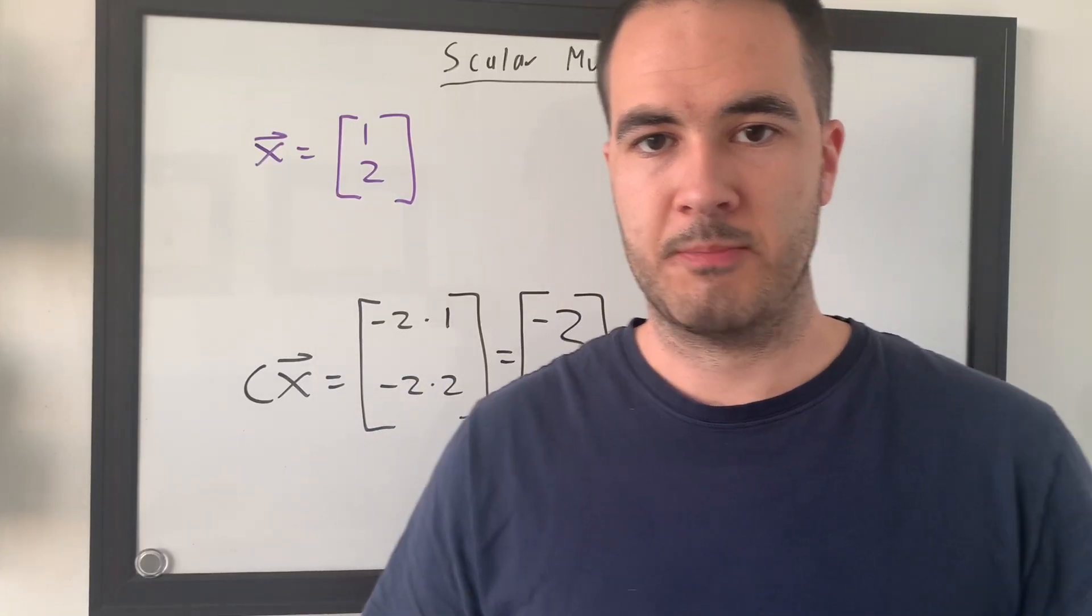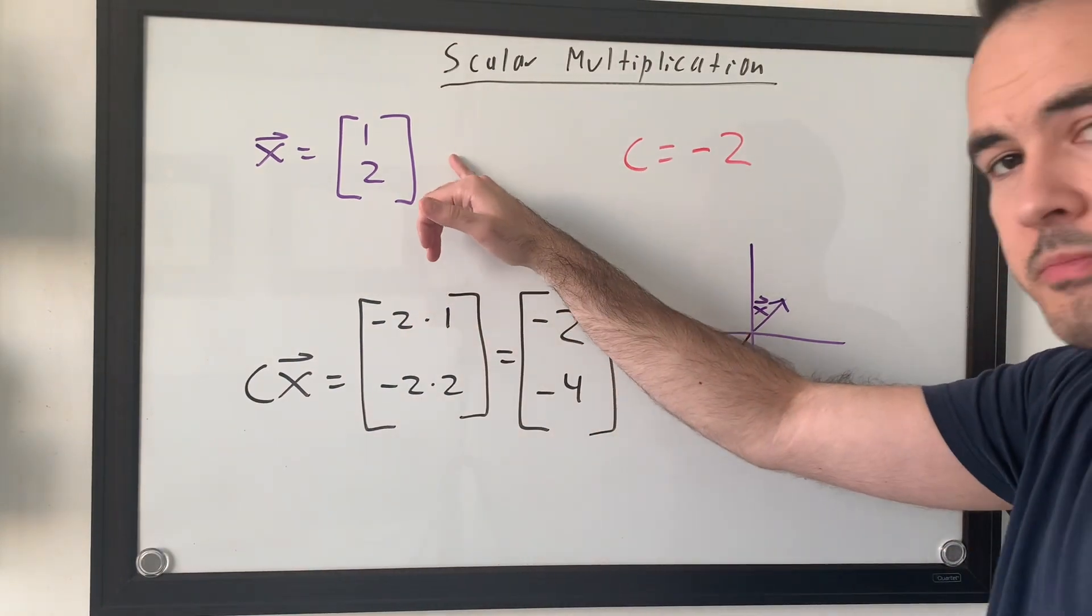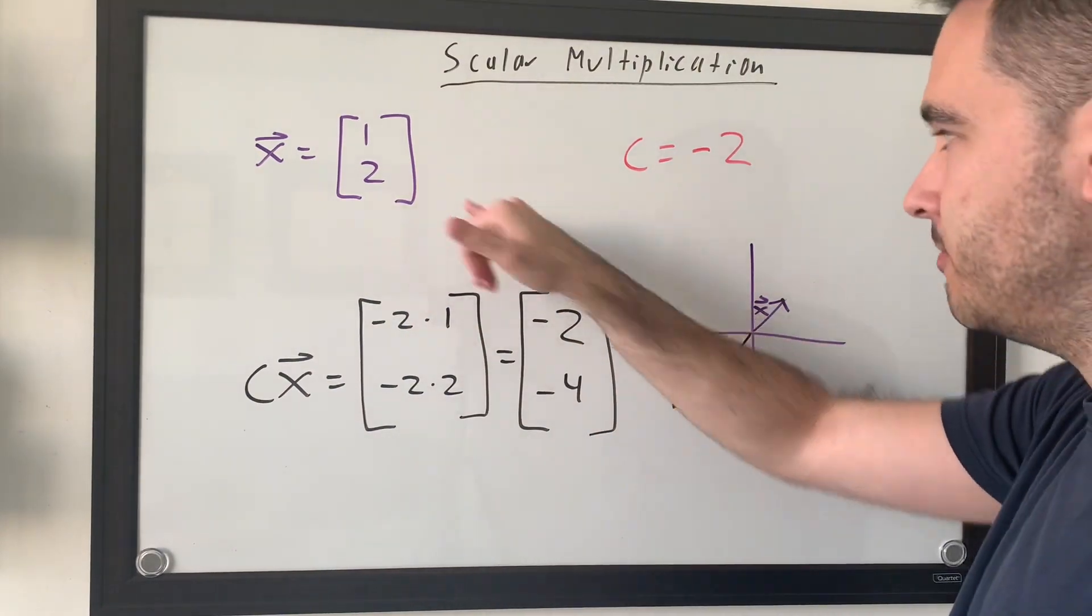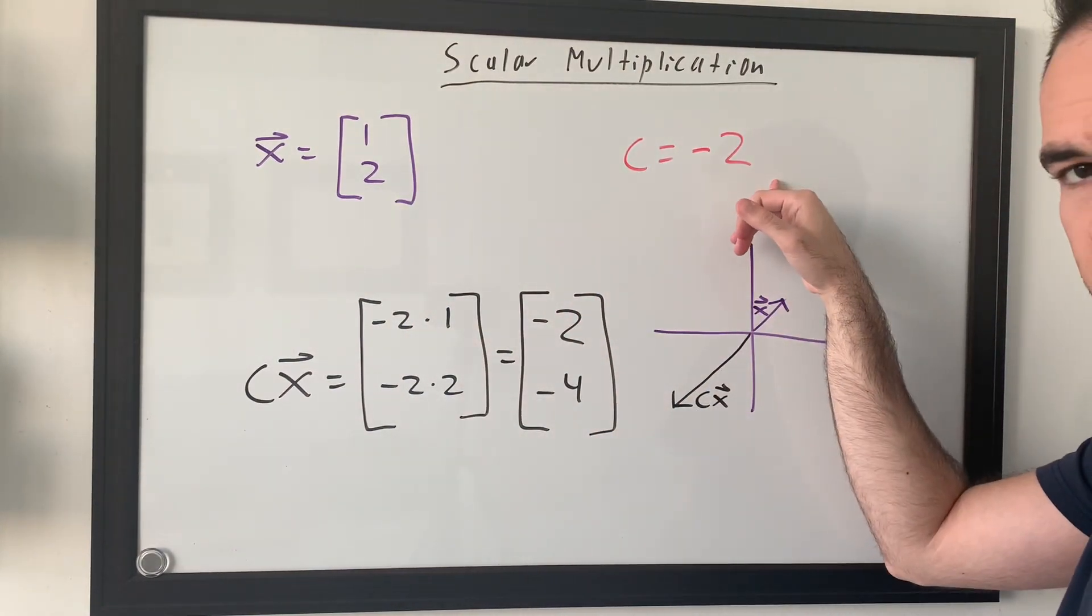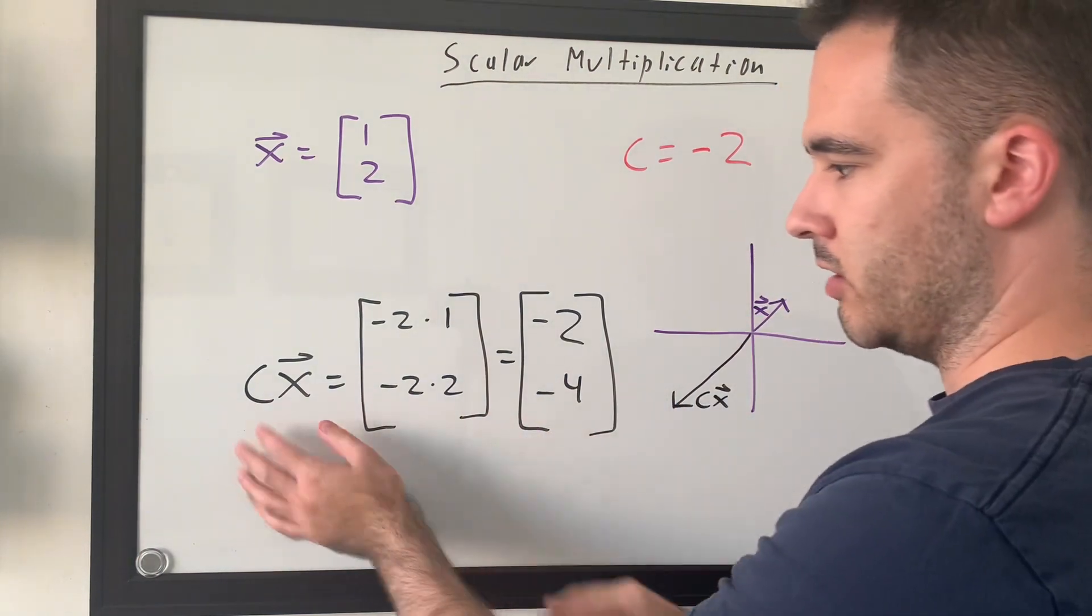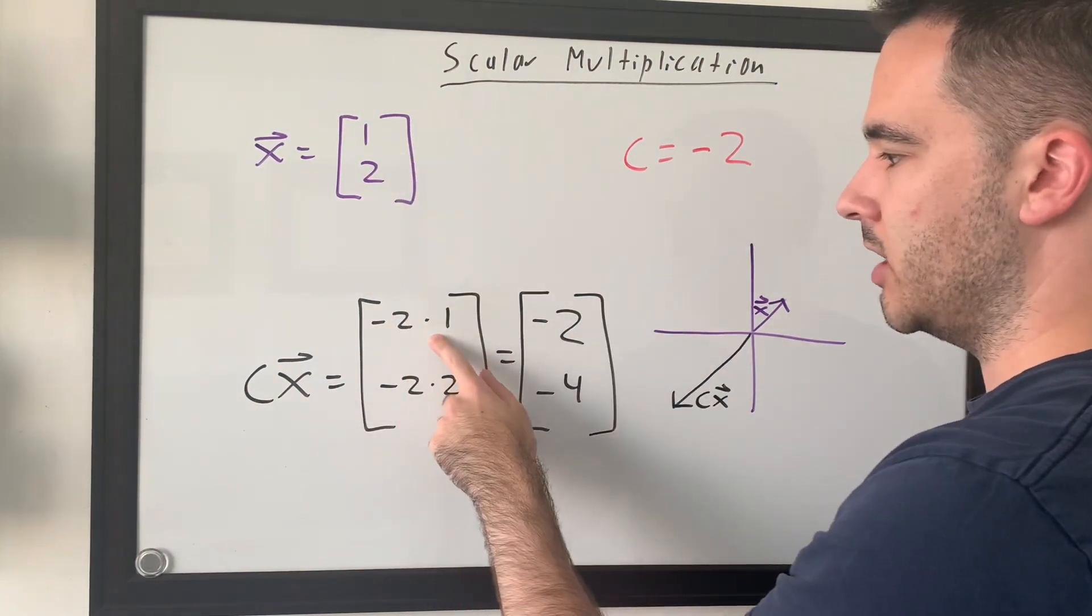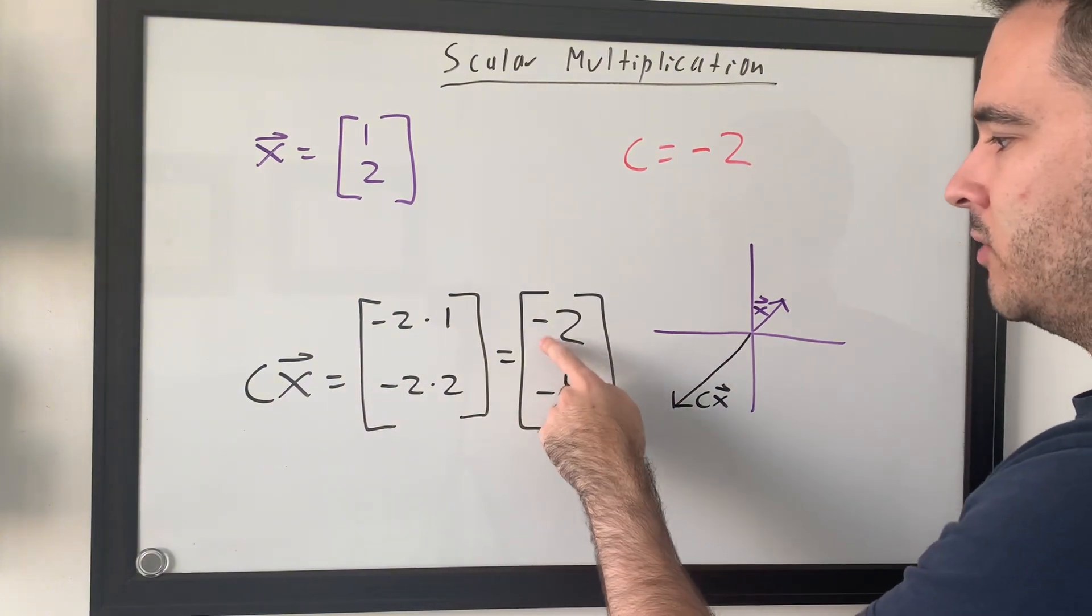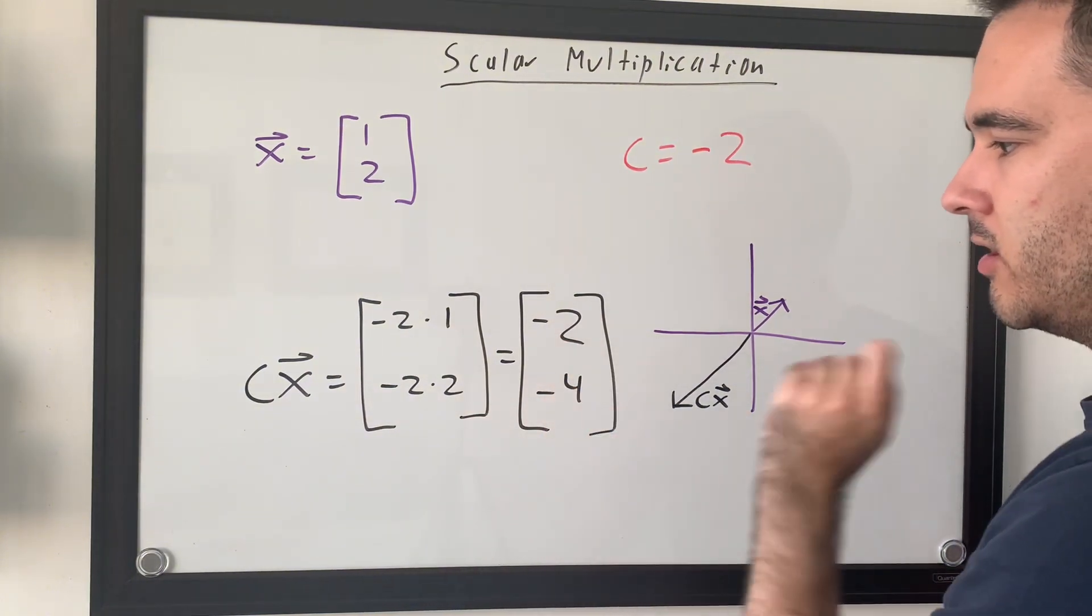So, let's go through an example of this. So, if I have X being our usual 1, 2 example and C becoming negative 2, from the definition, we're going to take the negative 2 and multiply it by each element here to get our final one, which is negative 2 and negative 4.